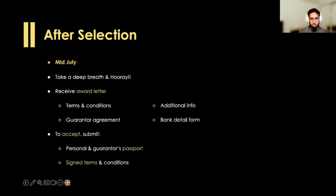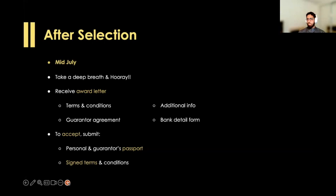So you got selected in mid-July — congratulations! It's definitely going to be a stressful time from March to July, but you got the award. You'll receive an email with the award letter and several other documents — bank forms, terms and conditions. To accept the offer, you send over your passport and sign the terms and conditions and send them back. It's as easy as that.